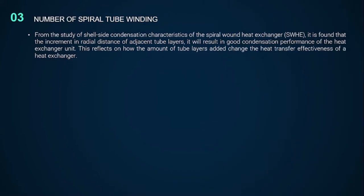We come to the last subsection: the number of spiral tube windings. From research on spiral wound heat exchangers, adding more tube layers inside the winding can change the effectiveness of the heat exchanger. In my own design, adding another flat spiral tube winding could help increase fluid residence inside the heat exchanger, hence enhancing the heat transfer process with a significant result in outlet temperature variation.